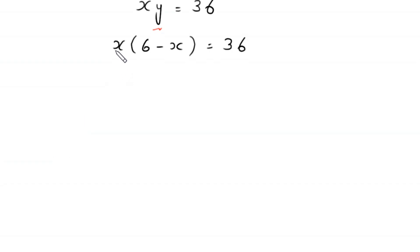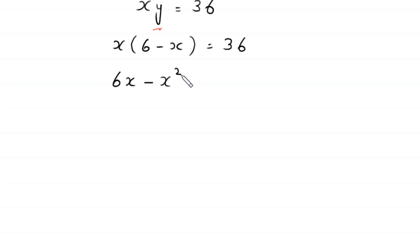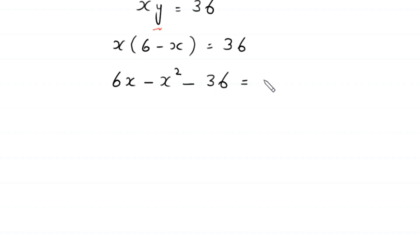This becomes x times (6 minus x) is equal to 36. Expanding: x times 6 gives 6x, and x times negative x gives negative x squared. We move 36 to the left-hand side, giving negative x squared plus 6x minus 36 equals 0.